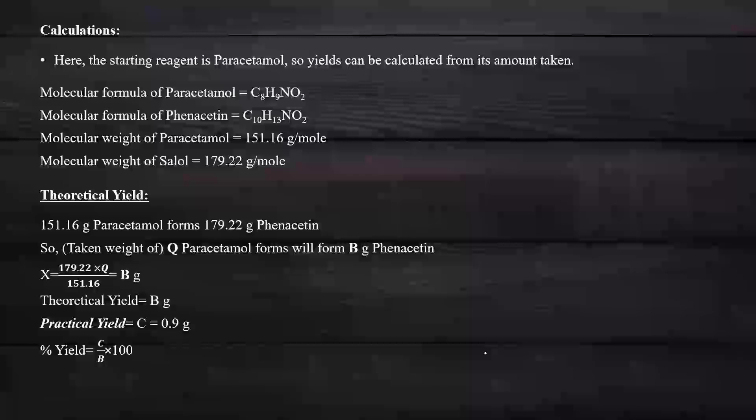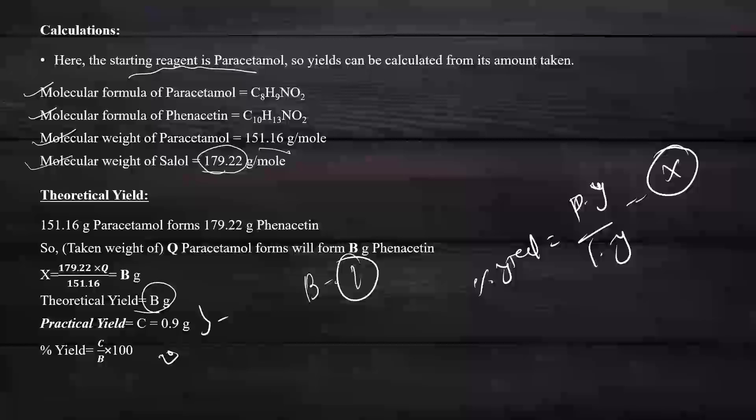Next, we'll discuss the calculations. In the calculation portion, the starting reagent is paracetamol. The molecular formulas for both starting material and product are here. The molecular weight of paracetamol is 151.16 g/mol, and the molecular weight of phenacetin is 179.22 g/mol. For the theoretical yield, we can calculate: 151.16 grams of paracetamol forms 179.22 grams of phenacetin. The theoretical yield is this value. The practical yield we get is 0.9 grams. From the practical yield and theoretical yield, we can get the percentage yield: practical yield divided by theoretical yield equals the percentage yield.